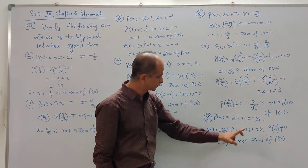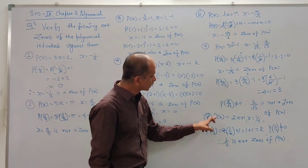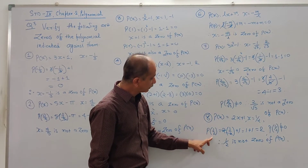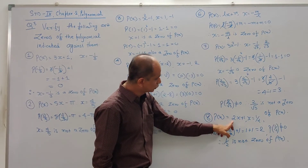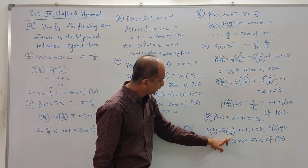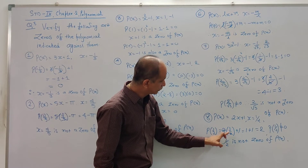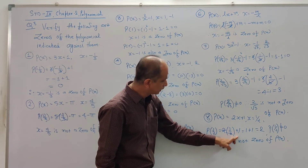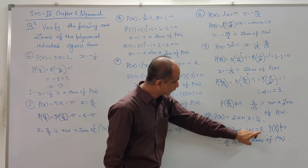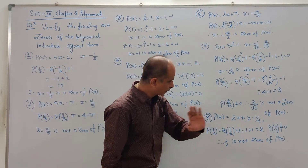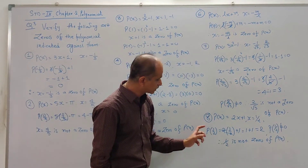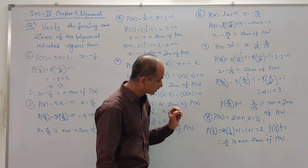Now for P(x) = 2x + 1, we check x = 1/2. P(1/2) = 2 × (1/2) + 1. The 2s cancel, giving 1 + 1 = 2. Since 2 is not equal to 0, x = 1/2 is not a zero of this polynomial.